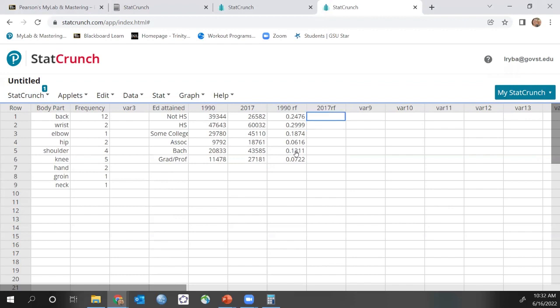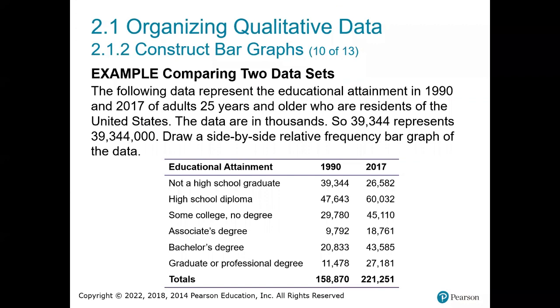Now I need to create the relative frequencies for 2017. My 2017 total is 221,251. So each of those values is going to be divided by 221,251 to get the relative frequency.